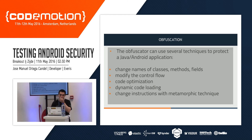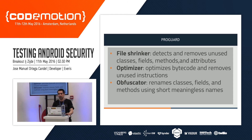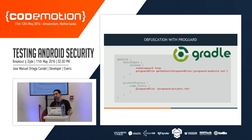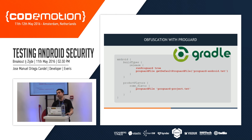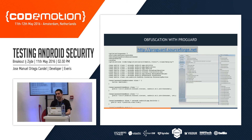In applications that use login or more critical user information, it is recommended to obfuscate the application with ProGuard. ProGuard comes by default with the Android SDK, and if we are using Gradle and Android Studio, we can use a Gradle configuration for ProGuard obfuscation. On ProGuard.sourceforge.net there is a more specific tool for advanced obfuscation of methods, classes, and so on.